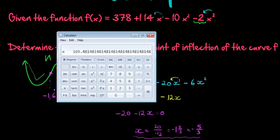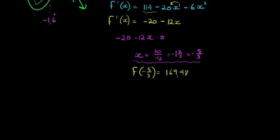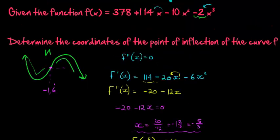Our final answer is 169.48 rounded, the y coordinate, the y value when we substitute. So f of negative 5 over 3 gives me 169.48. They asked me for the coordinates, so I must answer in coordinates. It's negative 5 over 3, and this was rounded so we should use approximation signs, and 169.48. That is the inflection point, the coordinates of the inflection point for this function.